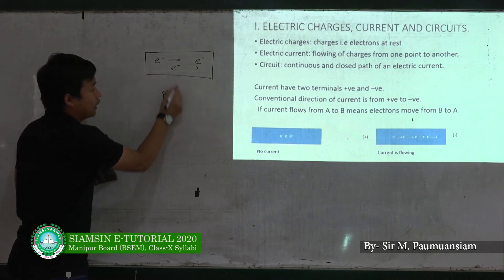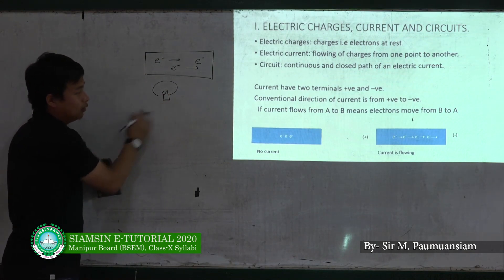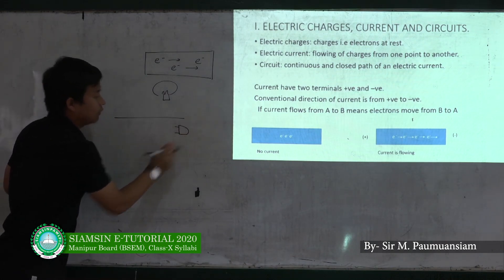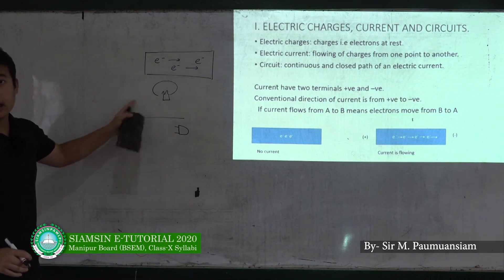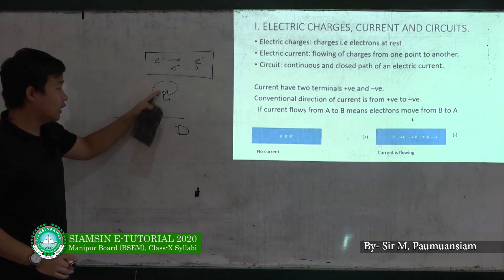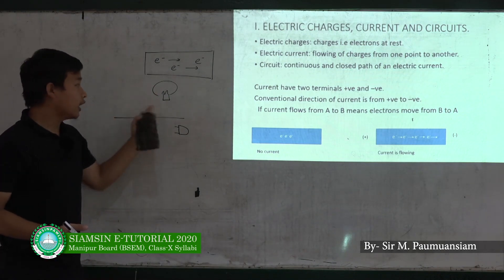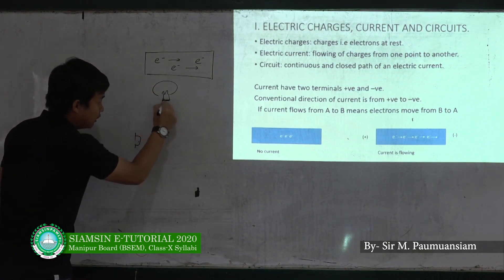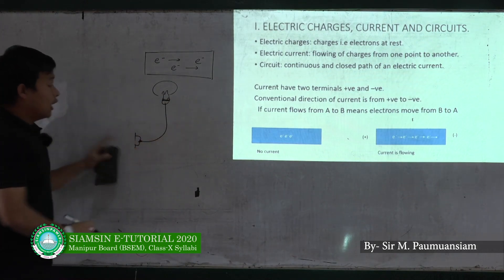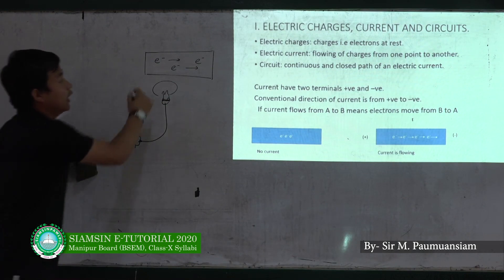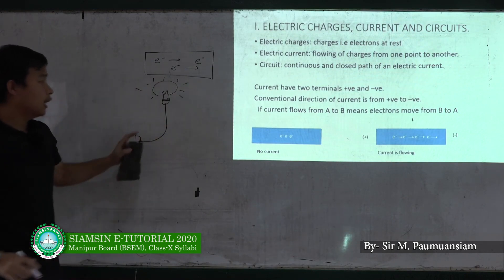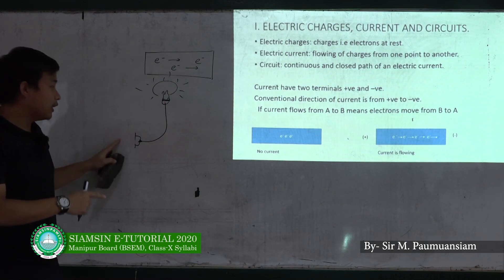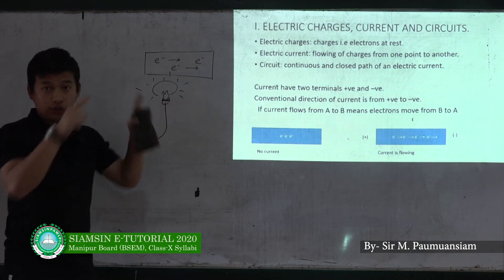There is an electric bulb. There is an electric valve in the front. Then there is a plug. If the battery or the valve is going to be connected, you can switch the electric valve. There is an electric circuit — it is a way to get the electric circuit.